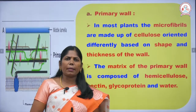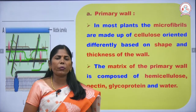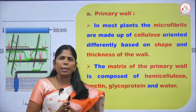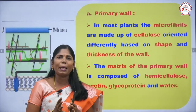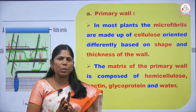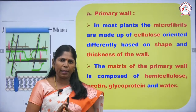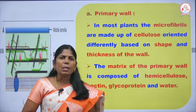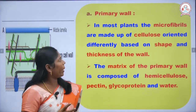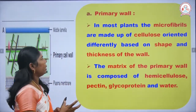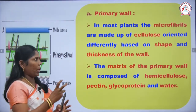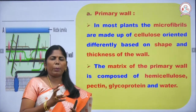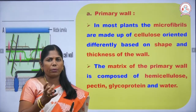Most plants have microfibrils, which are formed from micelles. Based on the arrangement of microfibrils, we can see different patterns on the cell. The arrangement of microfibrils determines the shape and pattern of the cell.